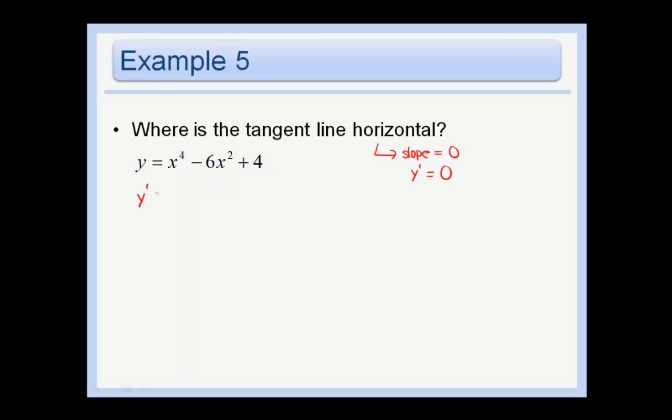First we should find y prime: 4x cubed minus 6 times 2 is 12x. The derivative of 4, remember, is just 0. That is a constant. And so we are saying where is the derivative 0?